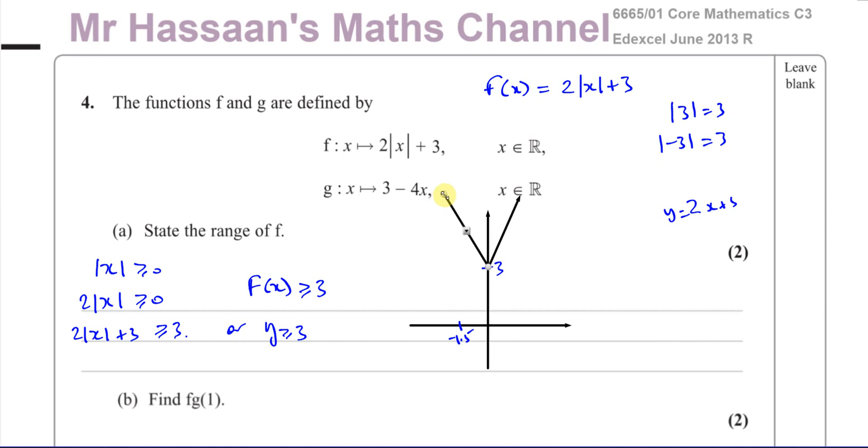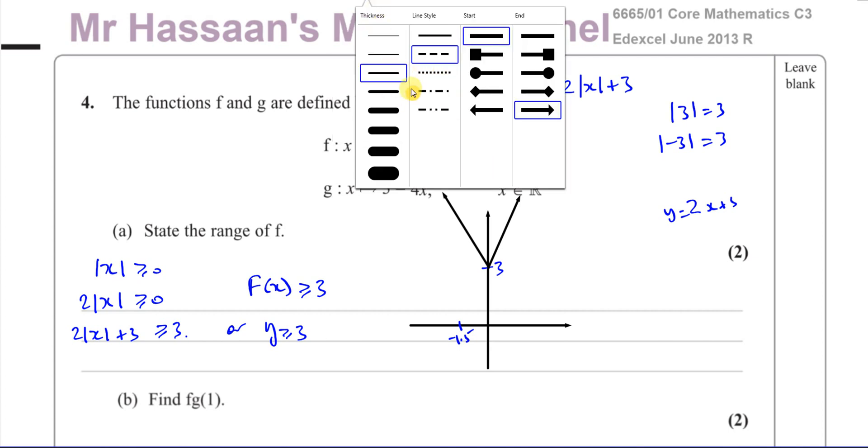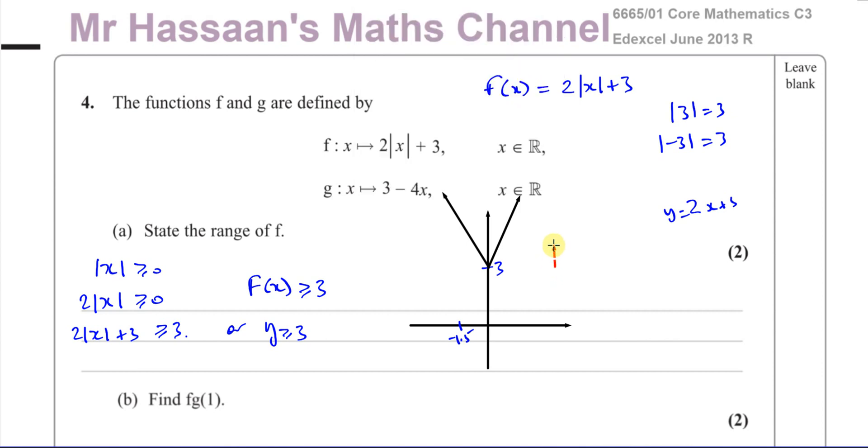And we can see that its range, the range is all the y-values it can take. We can see that its range is basically all values of y which are greater than 3. It's going to continue up from there. That's the lowest it can go. So you can say the range is y is greater than or equal to 3. So that's just a bit of an explanation for that range business. So there's the answer to 4 part a.